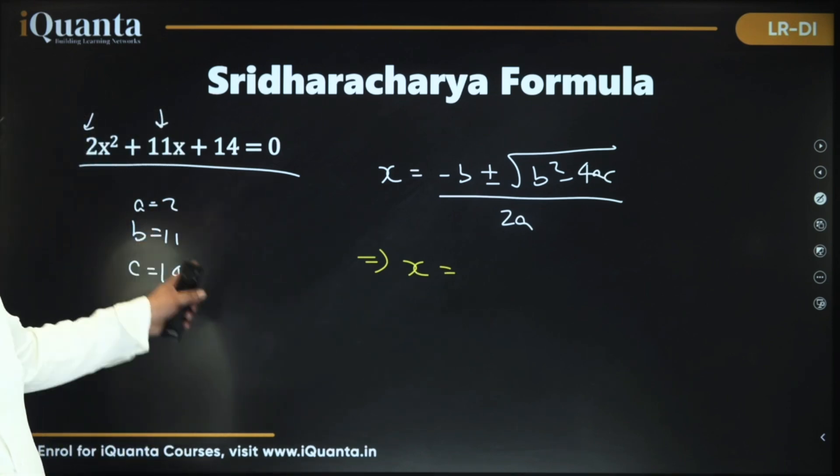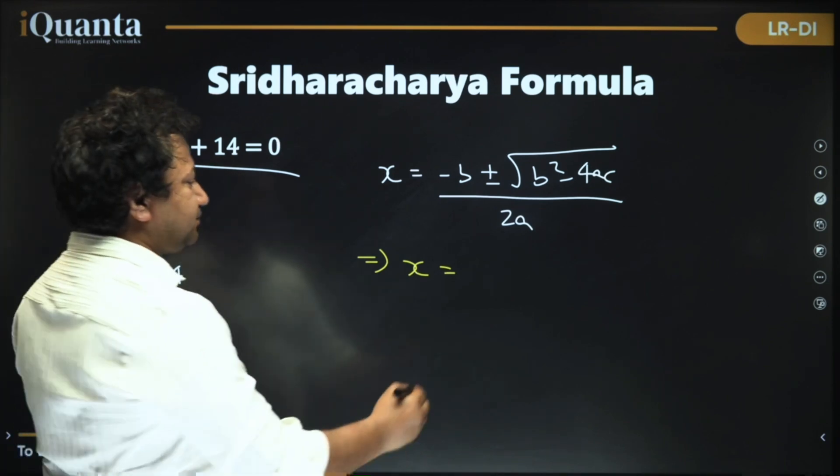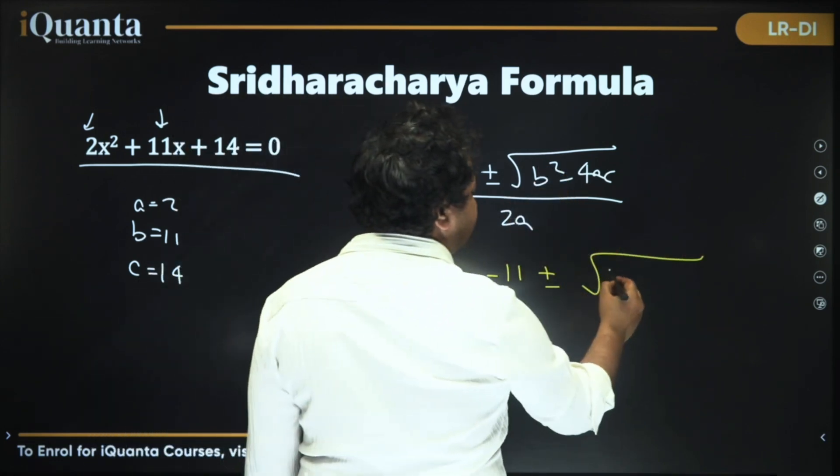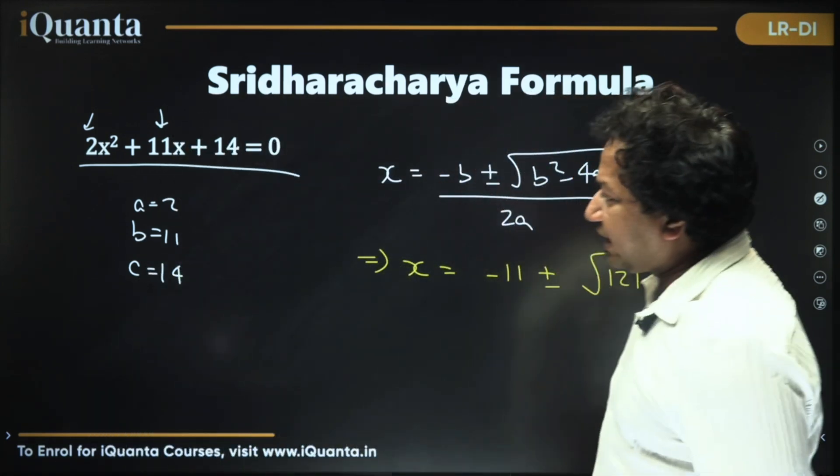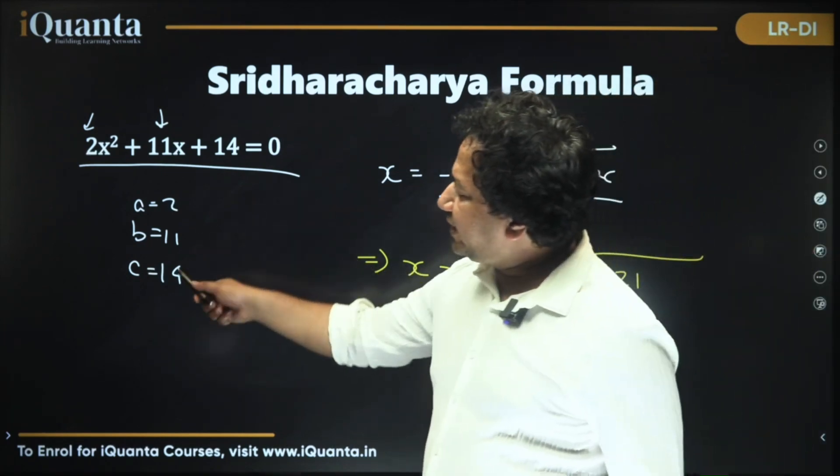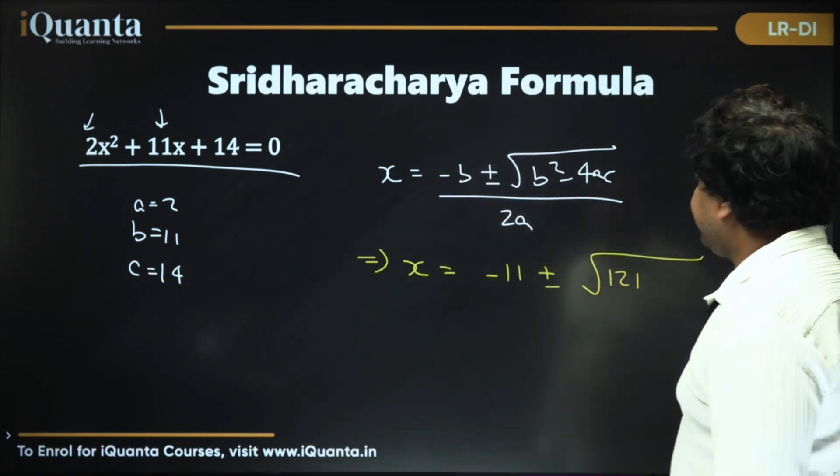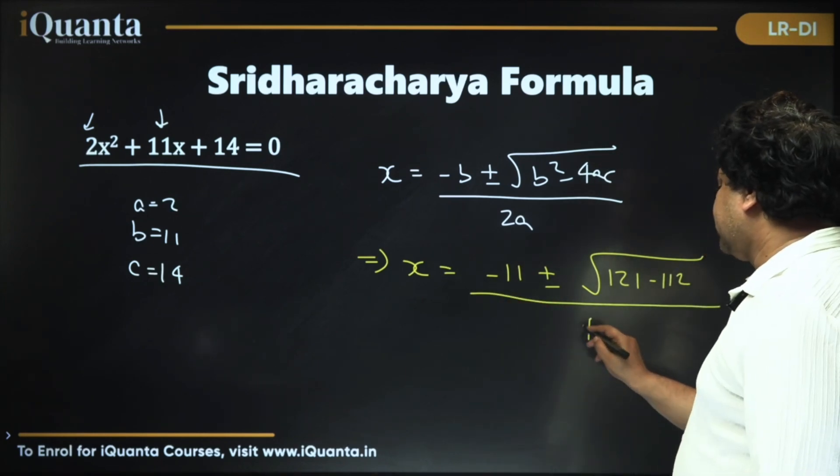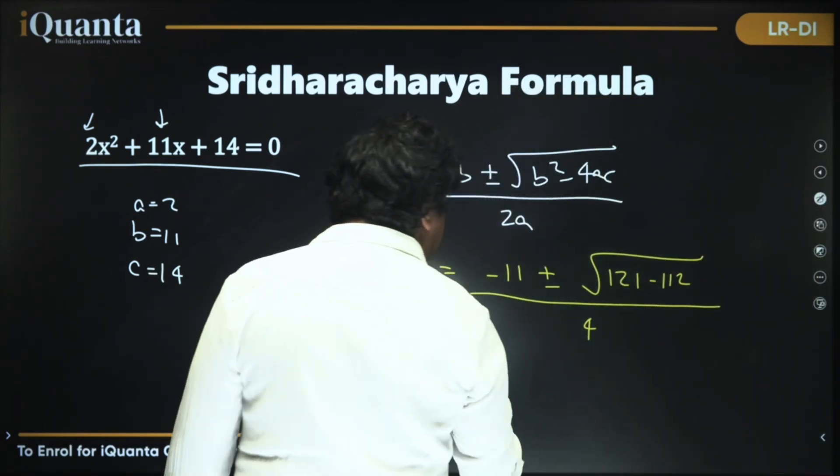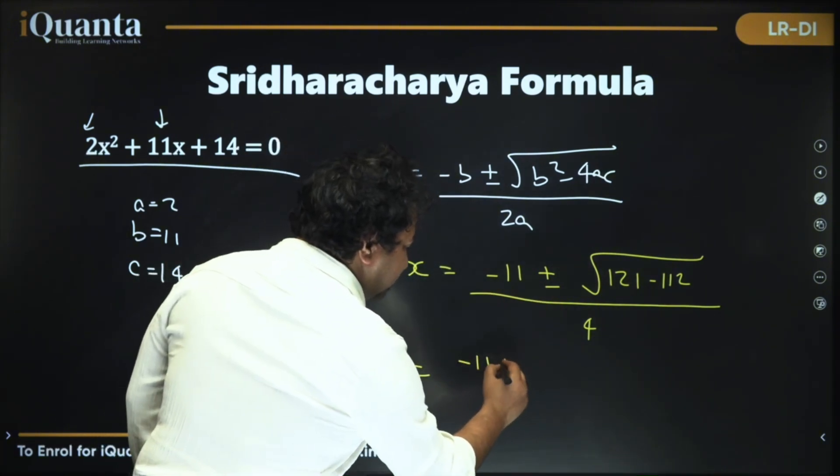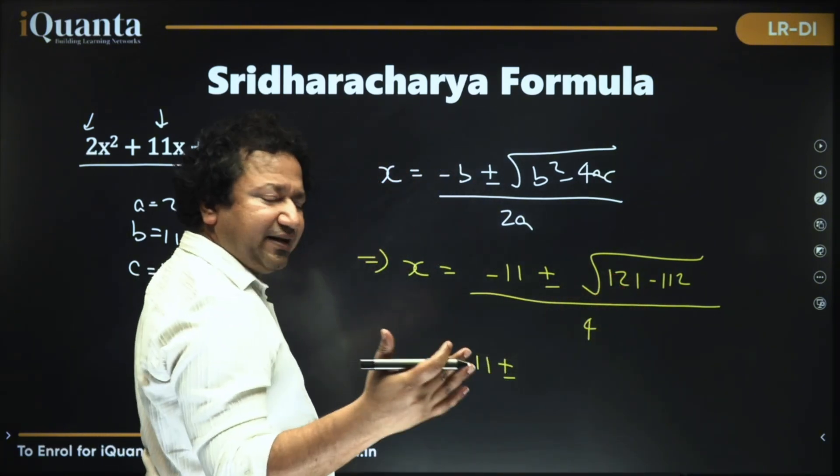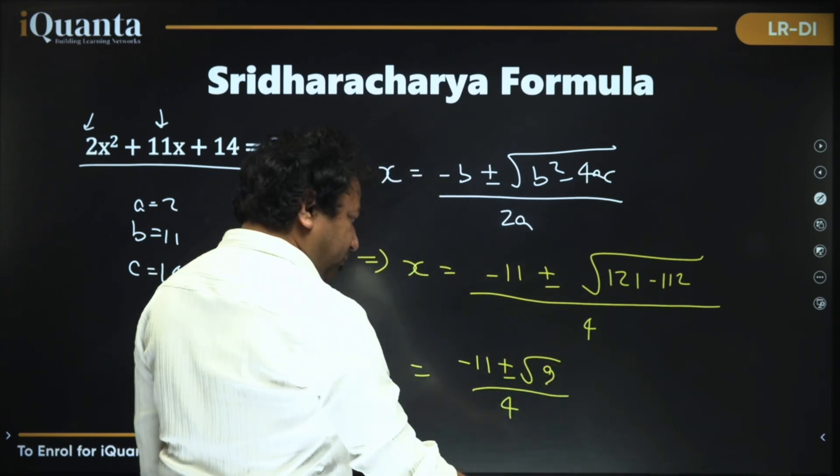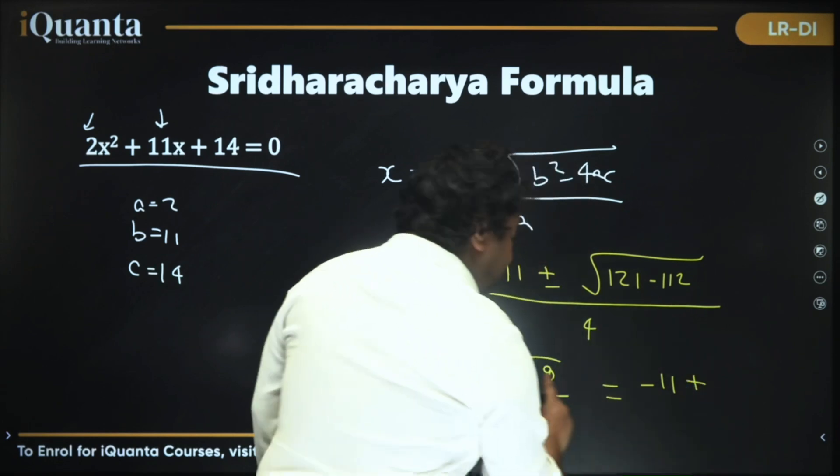x is, now -b. We'll have -11 here. Then ± square of -11 is 121, - 4 times ac. So 4 2s are 8, 8 14s are 112, - 112 is what we have, whole upon 2 times a, that is 2 2s are 4. Let's try to solve it. -11 ± this is 121 - 112, that is 9, √9 / 4. Let's solve further. -11, root 9 is 3.